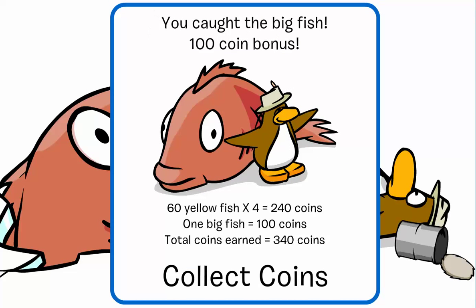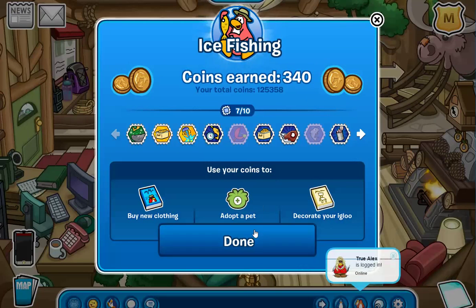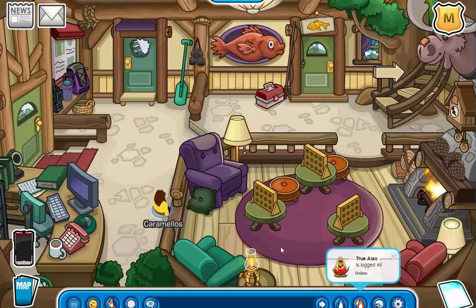Then you'll get this message that says, you caught the big fish, otherwise known as the mullet, 100 coin bonus, 60 yellow fish times 4, 200 foreign games, one big fish, 100 coins, total coins earned is 340 coins. And then you just collect your coins, there's a whole lot of coins in that process, but in the end, you get your coins, and you've also caught the mullet.